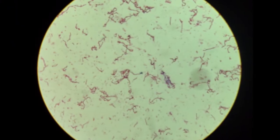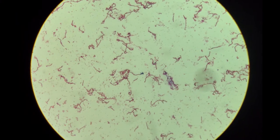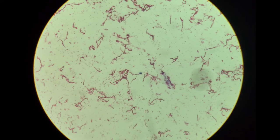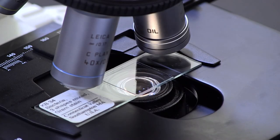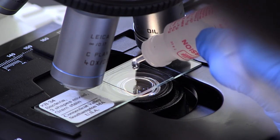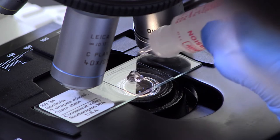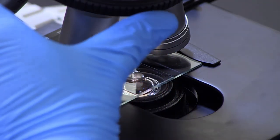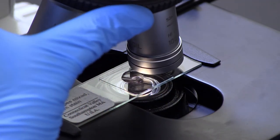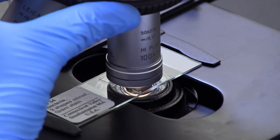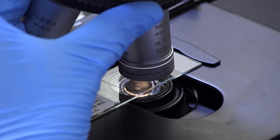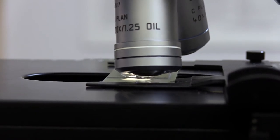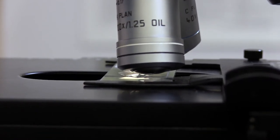When viewing prokaryotes, bacteria, and archaea, you will need to use the oil immersion lens. To do so, first, after viewing the specimen with the high dry lens and obtaining a clear image, swing the lens out of the way and add a single drop of immersion oil to the slide directly above the condenser. And second, rotate the oil immersion lens into place, making sure that the end of the lens is touching the oil. Remember, the oil immersion lens is the 100 times lens. Open the iris diaphragm almost all the way to get the highest quality image.